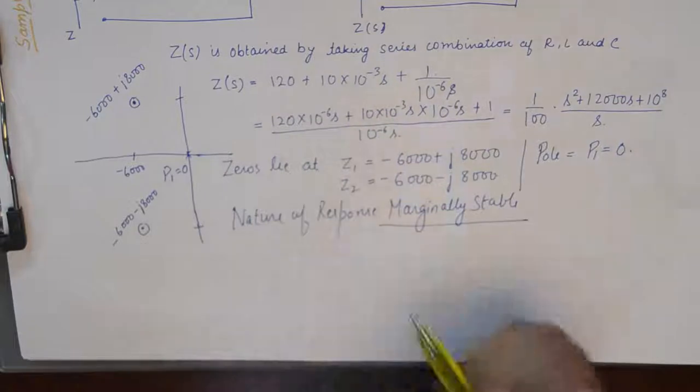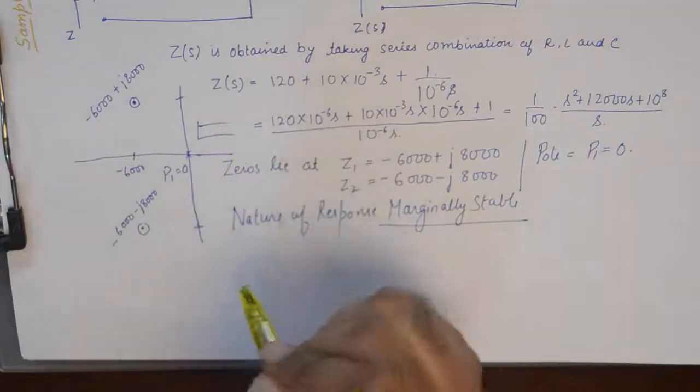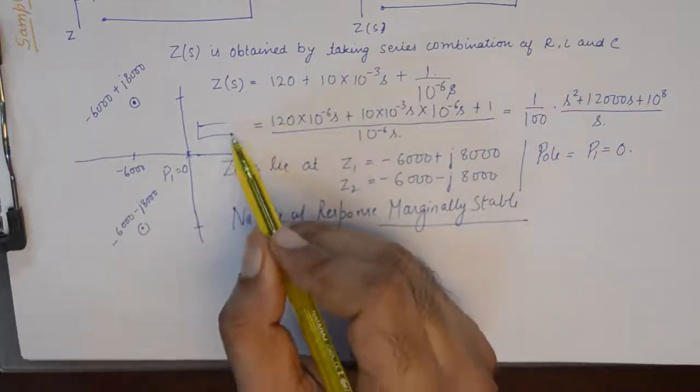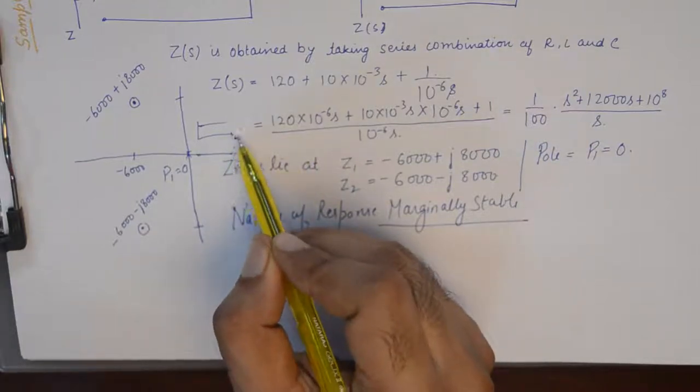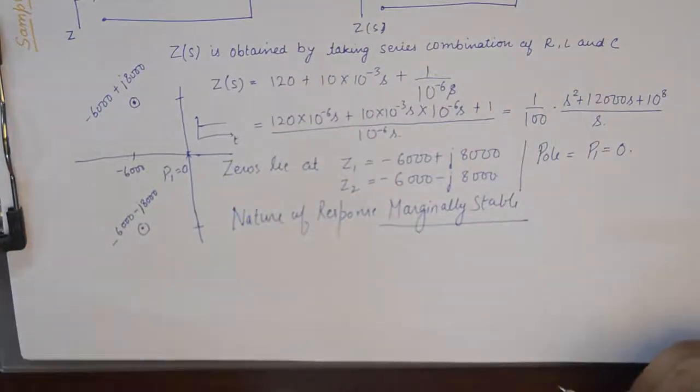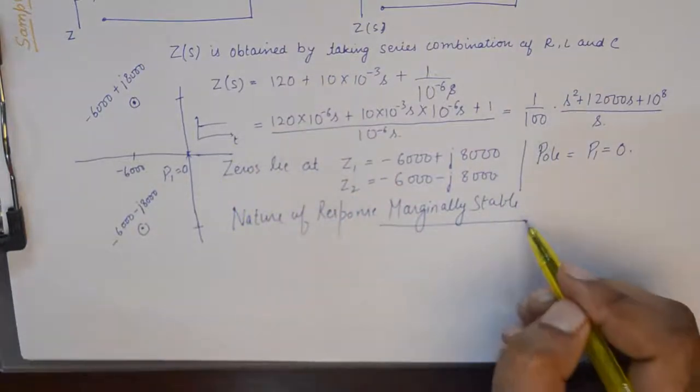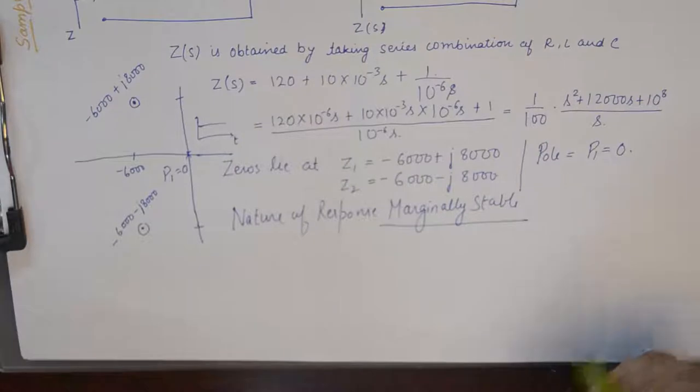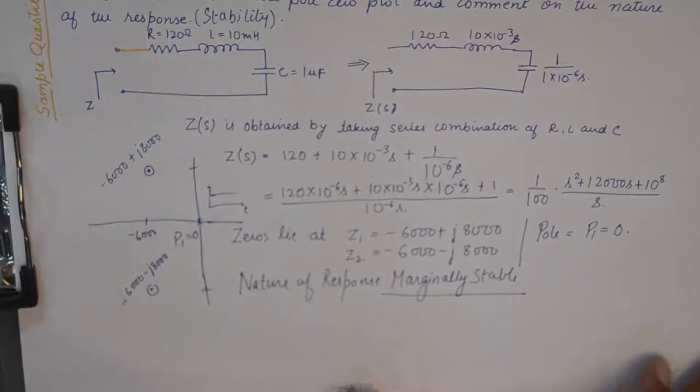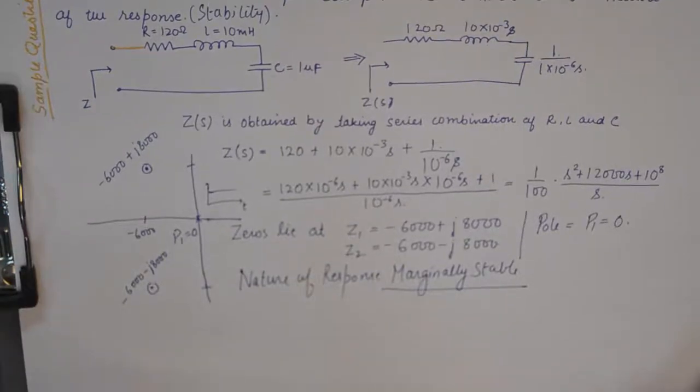So because of this, the graph of this would be like this. So as the time reaches infinite, its value remains constant, so it is marginally stable. So that is how a practical question looks like for pole zero plot and commenting on the nature of response.